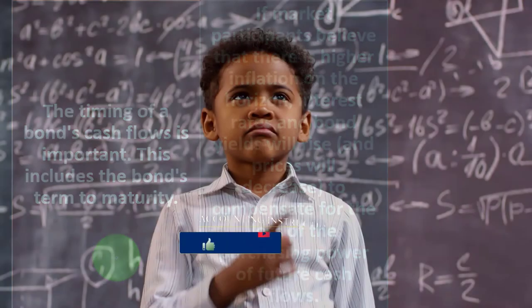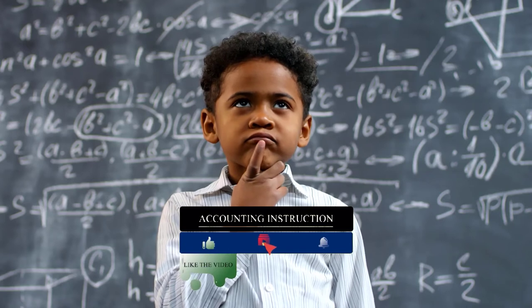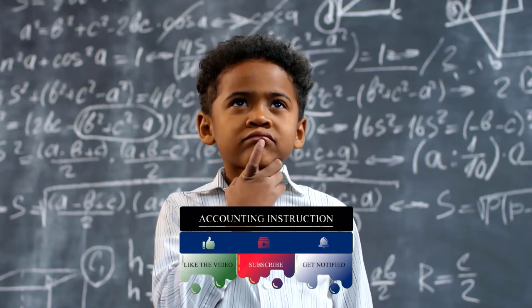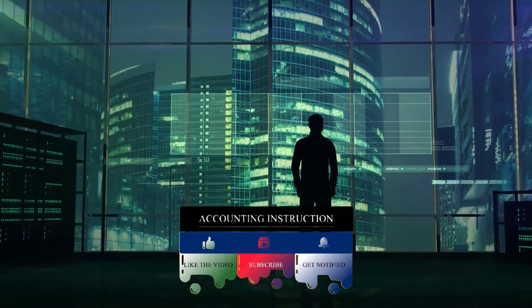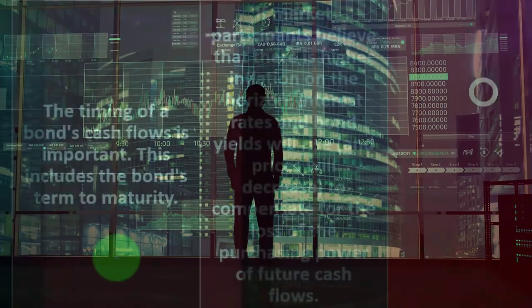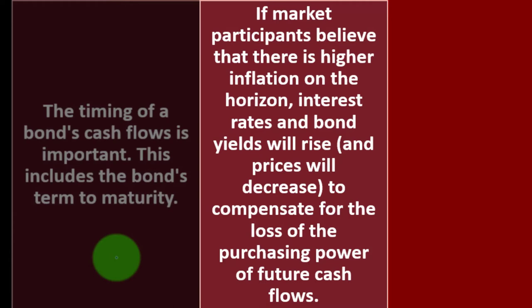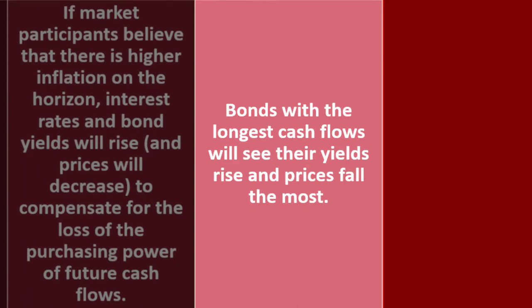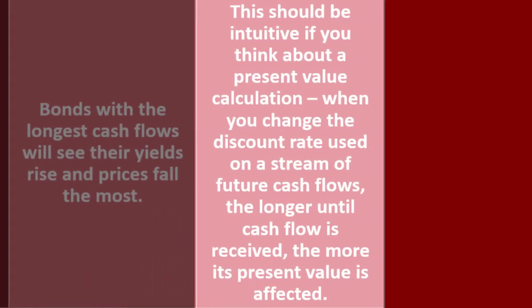The timing of a bond's cash flows is important and includes the bond's term to maturity. Think of bonds as having two cash flow streams: a fixed series of payments, possibly semi-annual, and then the face amount returned at maturity. If market participants expect higher inflation, interest rates and bond yields will rise and prices will decrease to compensate for the loss of purchasing power. Bonds with the longest cash flows will see their yields rise and prices fall the most.